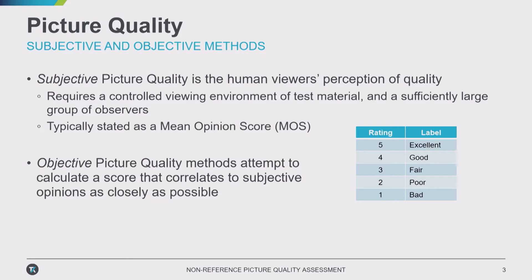Typically we use something called a mean opinion score, or MOS, which is a five-point scale as shown here. The mean of those 20 or 30 people who are scoring the content computes our mean opinion score. So it's as simple as that.